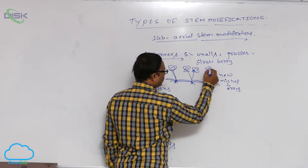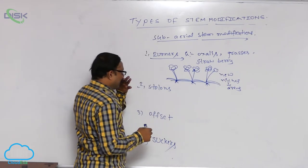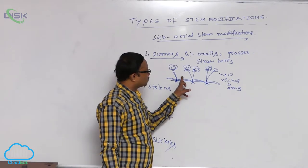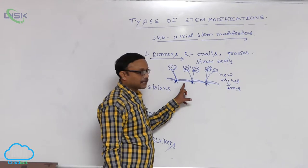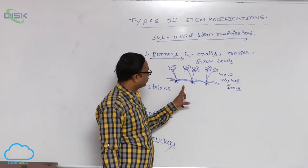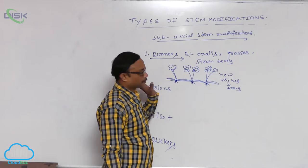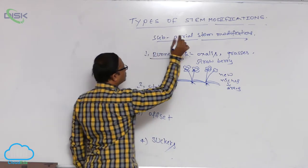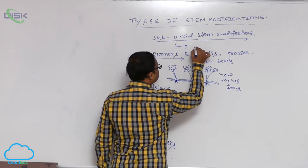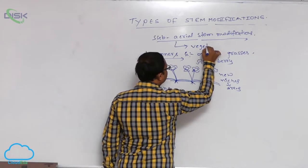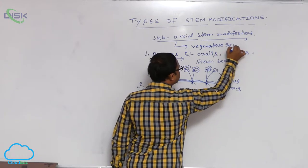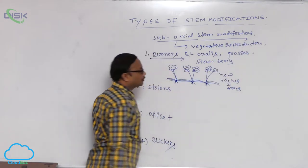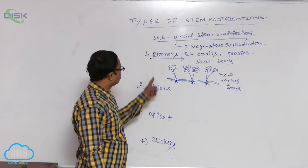When the internodes break down, each part lives independently. This means runners participate in vegetative reproduction. All sub-aerial stem modifications participate in vegetative reproduction.